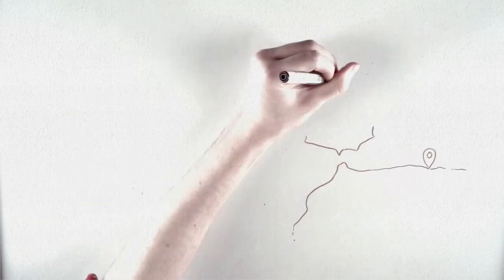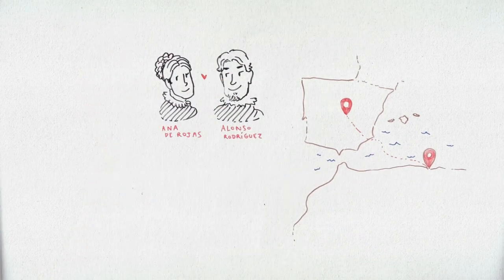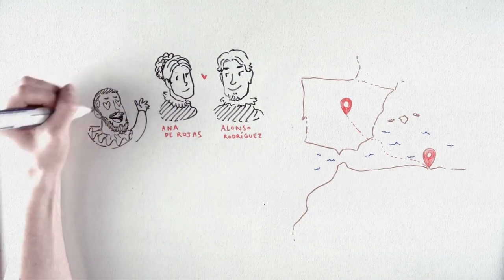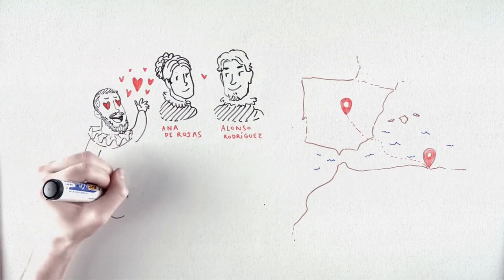On his return to Spain, he maintained relations with the unmarried woman Ana de Villafranca, also known as Ana de Rojas. With her, he would have a daughter named Isabel.